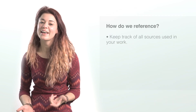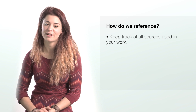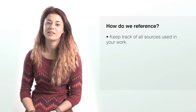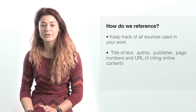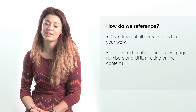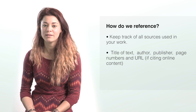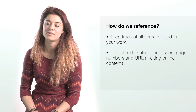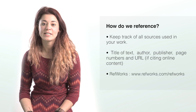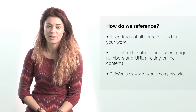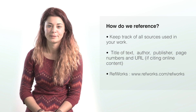So we'll talk about how you're going to reference things. Initially you should keep track of all the sources that you use to write your assignment. This includes the title of the text, author, publisher, page numbers, and a URL if you have access to the online document. Web-based programs such as RefWorks can help you keep track of the references you use during your assignment.